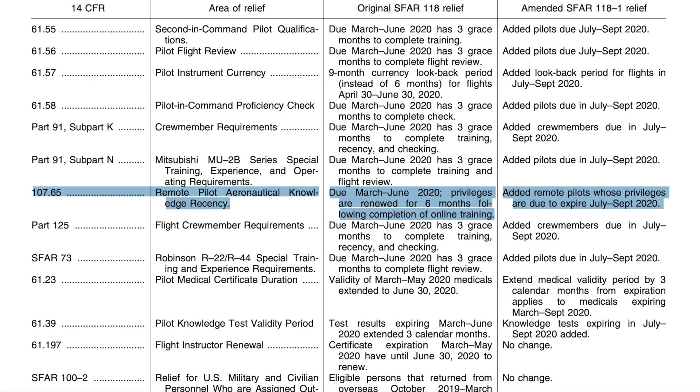The FAA basically decided that because there were a lot of testing centers that were closed, this was going to hurt people that have a certificate that needs to be renewed. I hate to say renewed because that's not the case. They had a certificate that was going to get out of currency and they need to get recurrent. So you have to do the exam under Part 107 every two years.